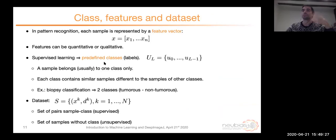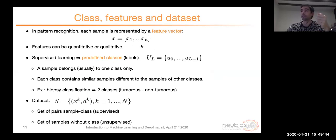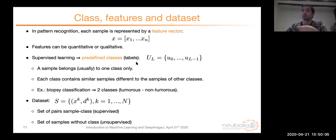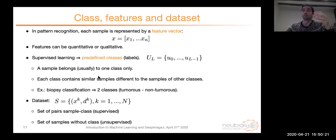A few key definitions: every sample is represented by a feature vector — the set of measurements put into a vector. Features can be qualitative or quantitative, though we usually work with numerical features. In supervised learning, the classes are predefined and usually far fewer than the number of samples. Ideally, every sample belongs to only one class, and each class has plenty of samples that are similar to each other and different from samples belonging to other classes.